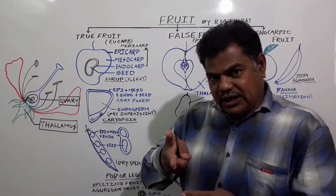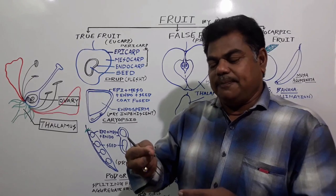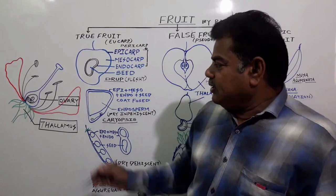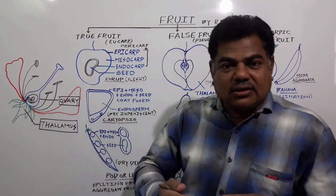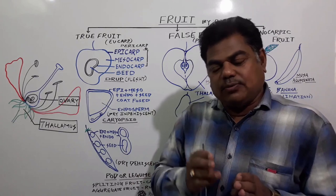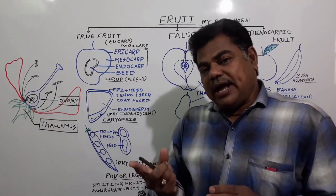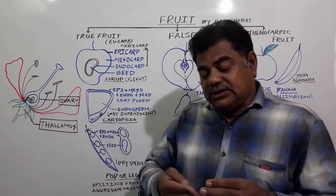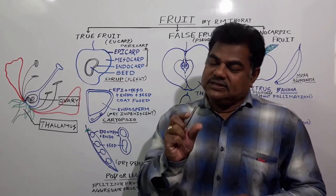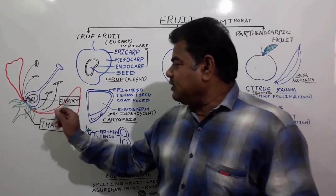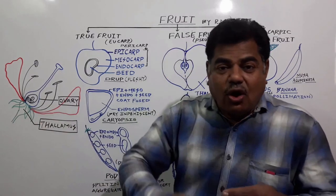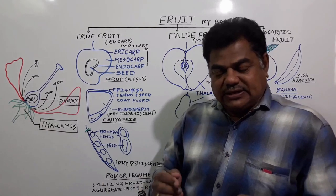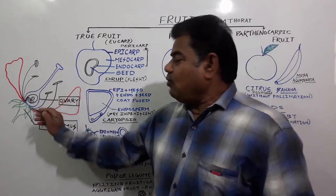The primary endosperm cell divides into two cells, and the zygote divides and transforms into an embryo. In the embryo sac, in the case of monocots, monocot embryo formation takes place, and in the case of dicots, dicot embryo formation takes place. As soon as fertilization is complete, the ovule gets transformed into a seed, and simultaneously the ovary gets ripened.